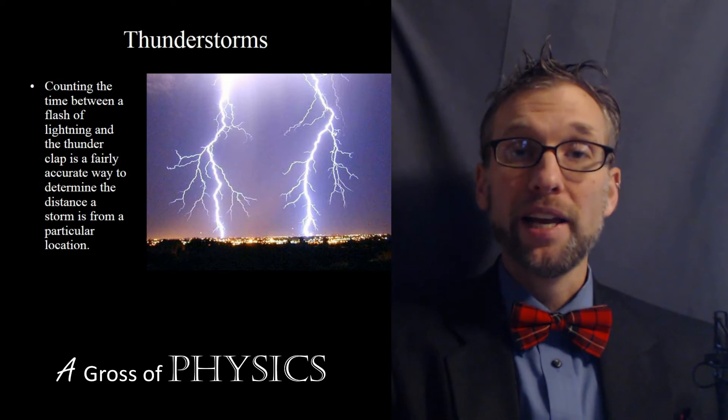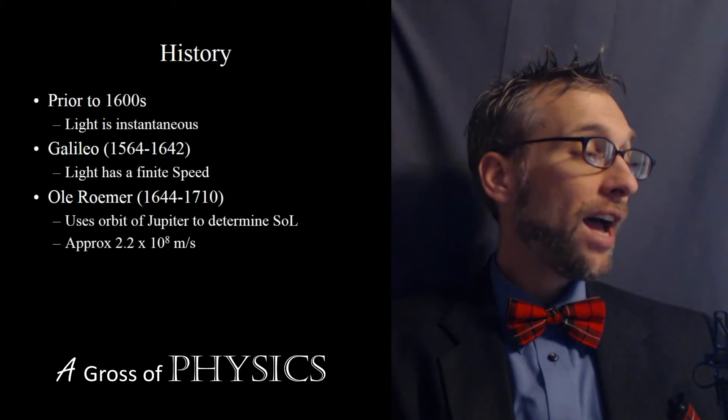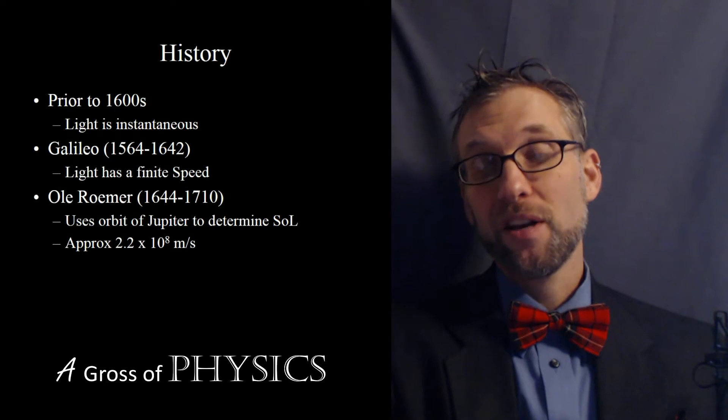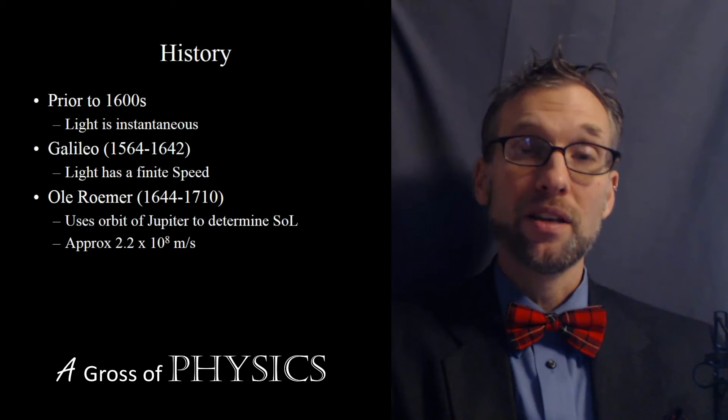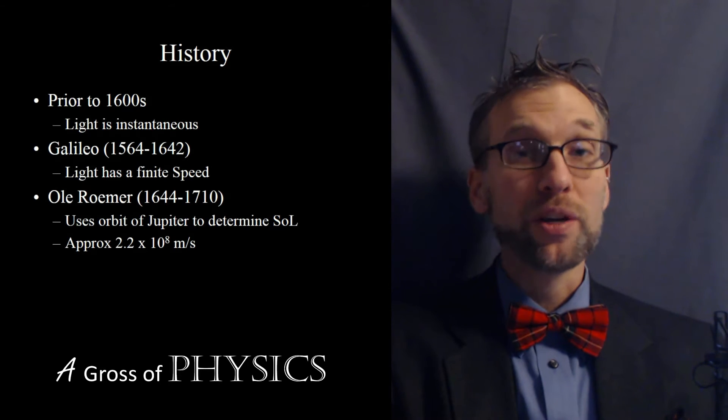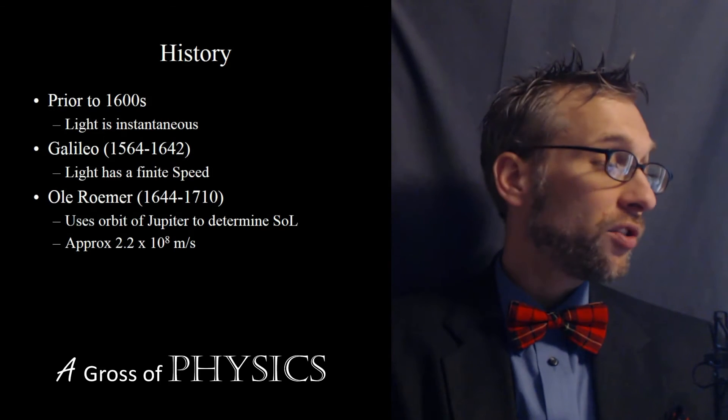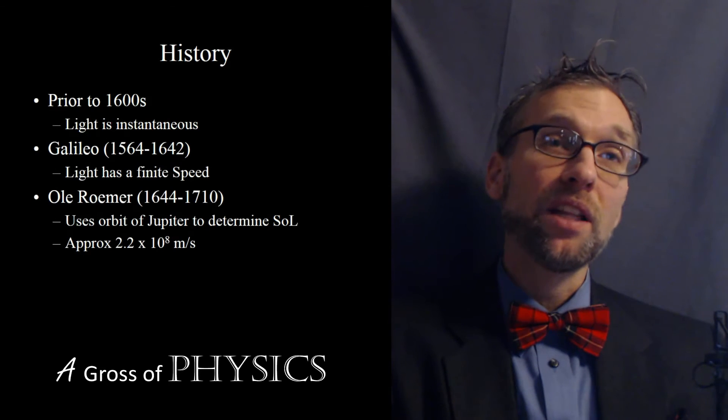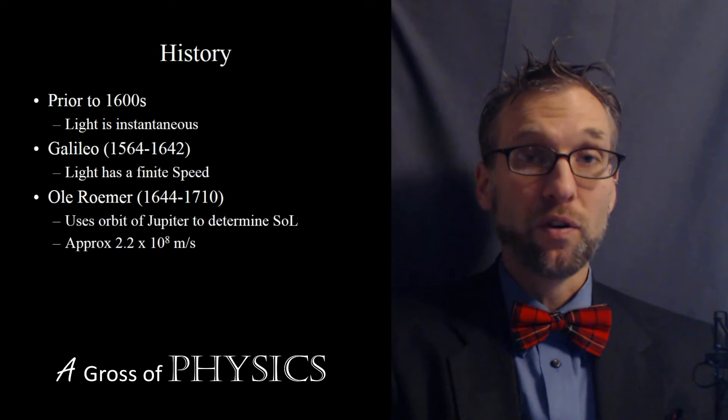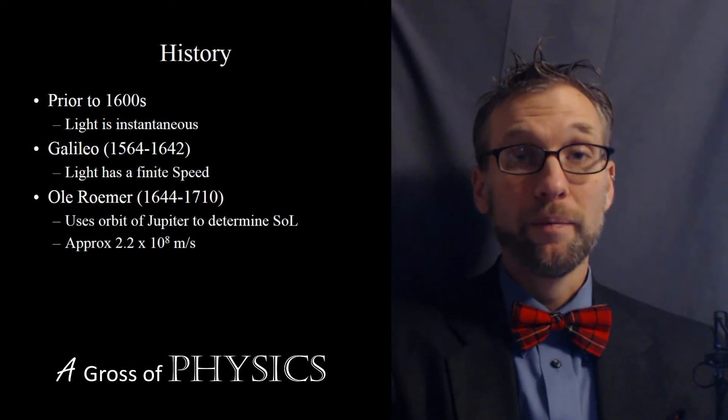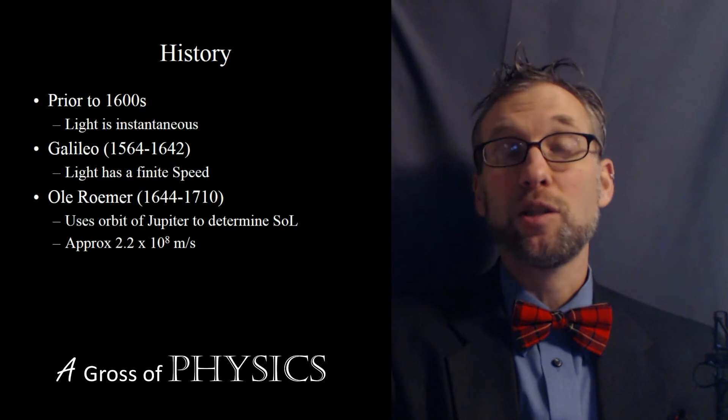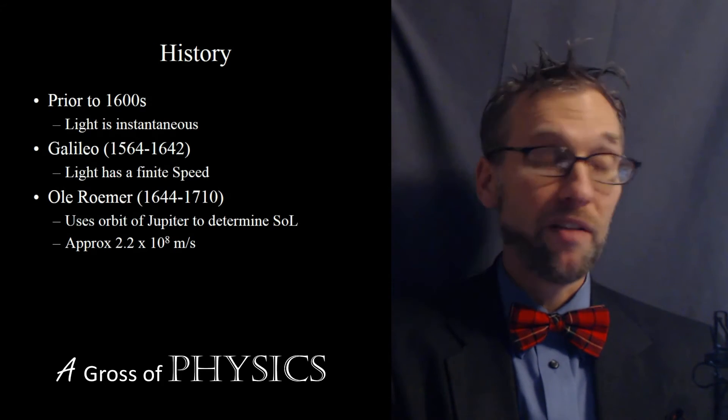Now knowing the speed of light wasn't something that we always knew. In fact, it was a value that was fluid over the years. Light obviously has a specific value, but we as humans didn't know what that value was until fairly recently. Back before the 1600s, people believed that light was instantaneous, that as soon as you turned it on, it traveled across the universe or as far as it needed to go immediately. After that, Galileo was the first to deduce that it had a finite speed, but he wasn't able to determine the value.